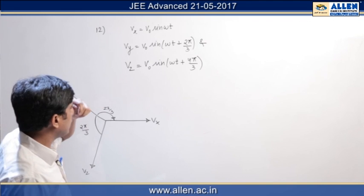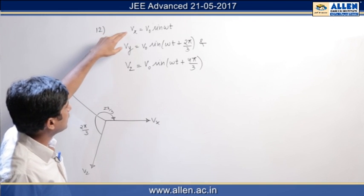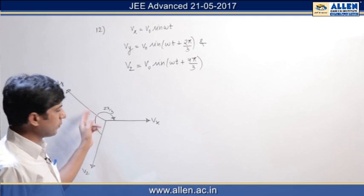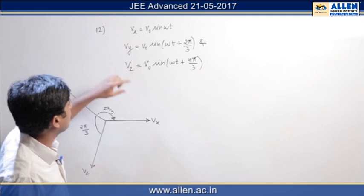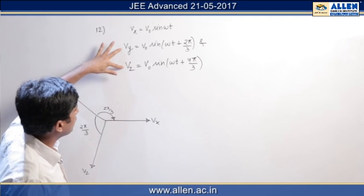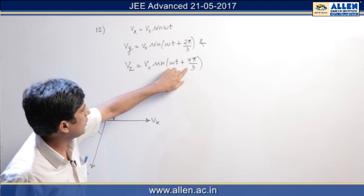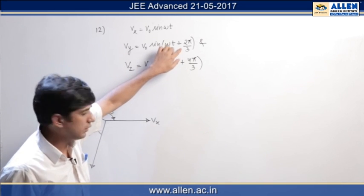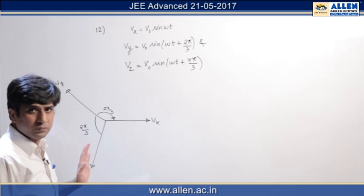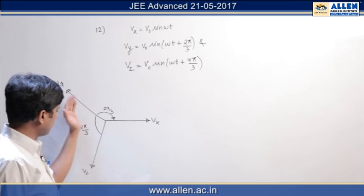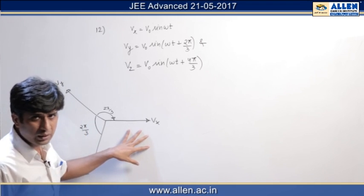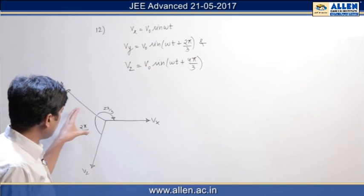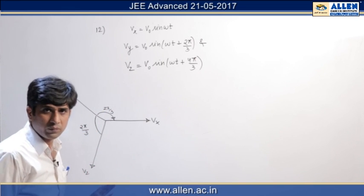Clearly it can be said that phase difference between vx and vy is 2π by 3, and phase difference between vz and vy must be 4π by 3 minus 2π by 3, that is 2π by 3. That means each phasor vector of this phasor diagram is making 120 degrees from each other.